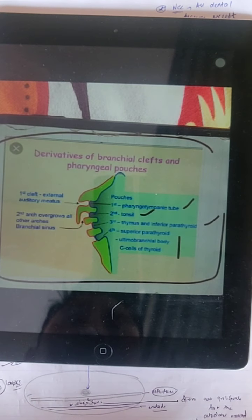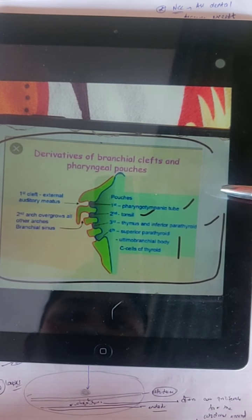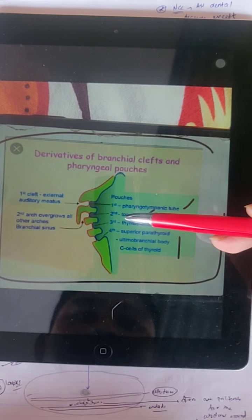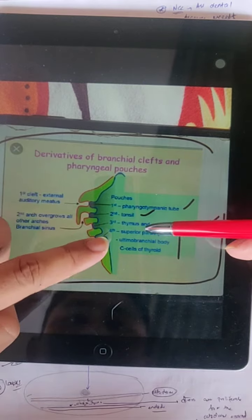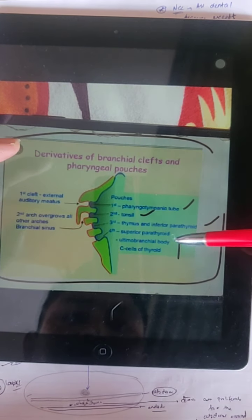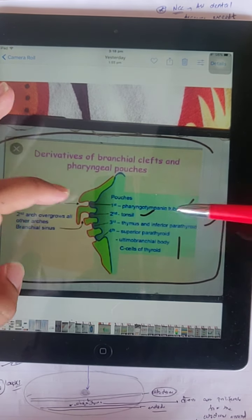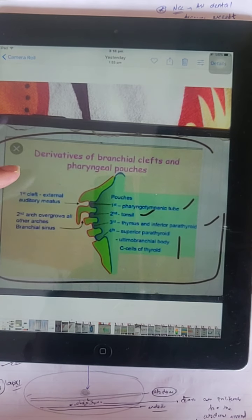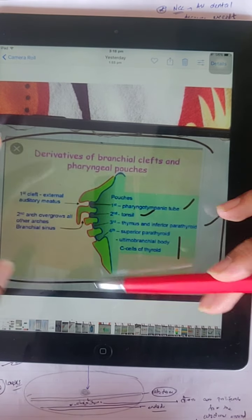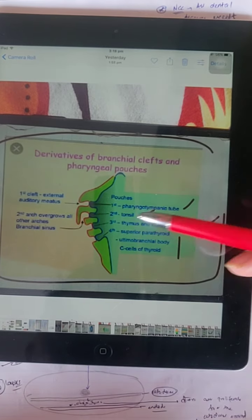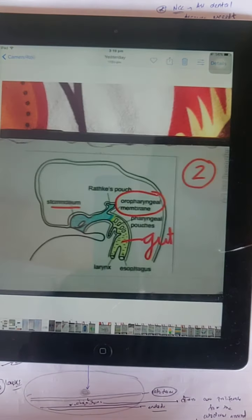The derivatives of cleft and pharyngeal pouches: first pouch is sinus, third is inferior parathyroid, fourth is superior parathyroid. The first cleft forms external auditory meatus. The second arch causes overgrowth of all other arches.